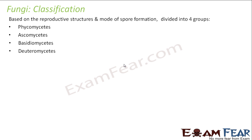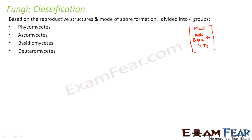The term 'mycetes' has come from mycelium. To remember these names in a simpler way, you can use a mnemonic: 'pho' for phycomycetes, 'ask' for ascomycetes, 'basic' for basidiomycetes, and 'duty' for deuteromycetes. So if you remember 'first ask for basic duty,' you can recall all four groups — because in biology, remembering the terms is a difficult job.